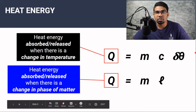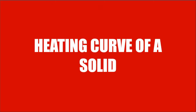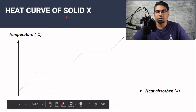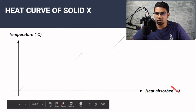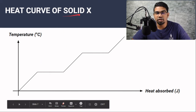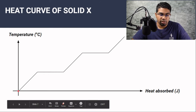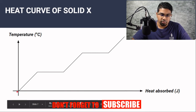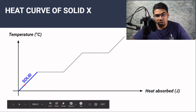Let's look at when the temperature is constant and when the temperature will go up. Let's look at the heating curve of solid X. This is the temperature axis and this is the heat absorbed, meaning as we go on, more and more heat is being absorbed. So the starting phase will be solid. Heat is supplied continuously throughout this process, and when we first begin, this is in the solid phase. As we supply more and more heat, the temperature will go up.